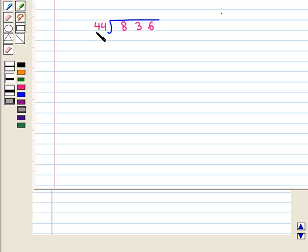So now we divide. See, 44 into 1 is 44 and 44 into 2 is 88. Since 44 is less than 83, so we will go by 1 in quotient.